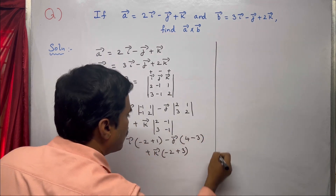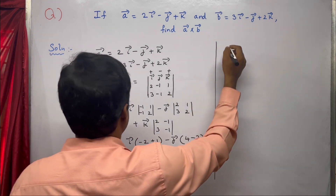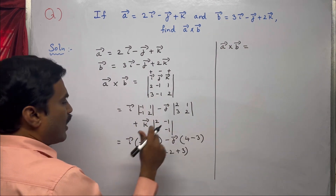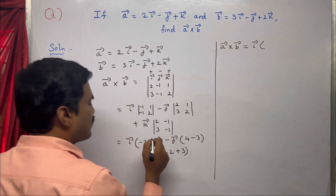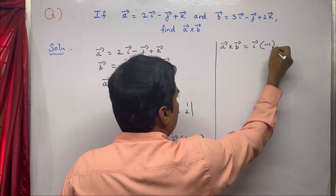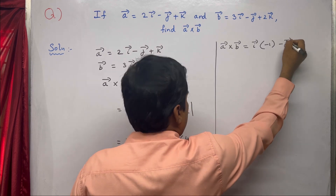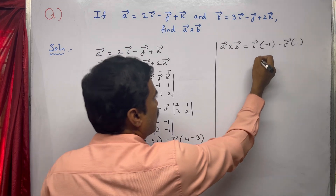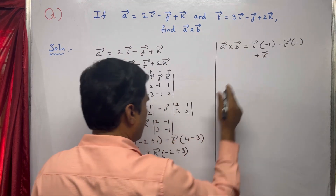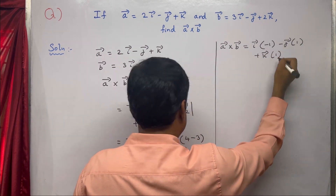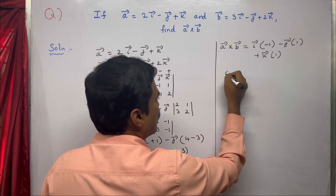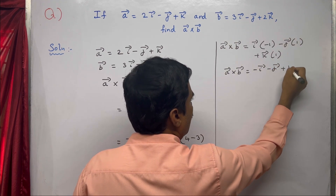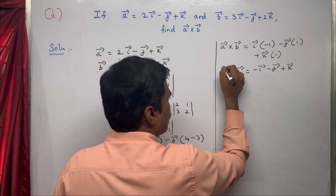Simplifying inside the brackets: a̅ × b̅ = i̅(−2 + 1) − j̅(4 − 3) + k̅(3 − 2), which equals i̅(−1) − j̅(1) + k̅(1). Therefore, a̅ × b̅ = −i̅ − j̅ + k̅.